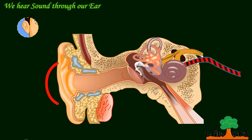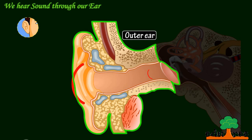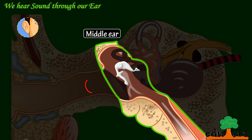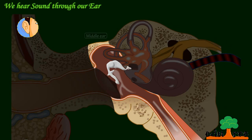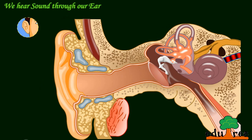The ear is divided into three sections: the outer ear, the middle ear, and the inner ear. These all work together to pass sound to your ear and to your brain.